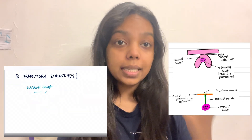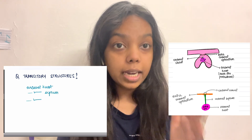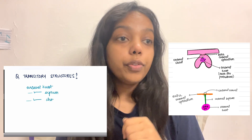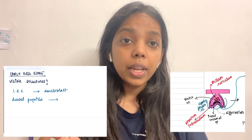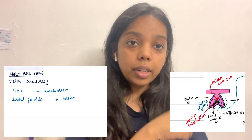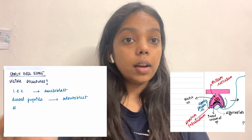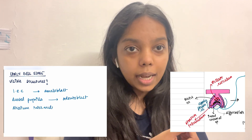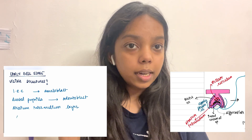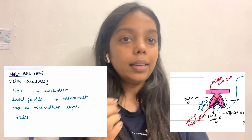Transitory structures in the cap stage include the enamel knot, enamel septum, enamel cord, and enamel navel. Moving to the early bell stage: the inner enamel epithelium is differentiated into ameloblasts and the dental papilla is differentiated into odontoblasts.